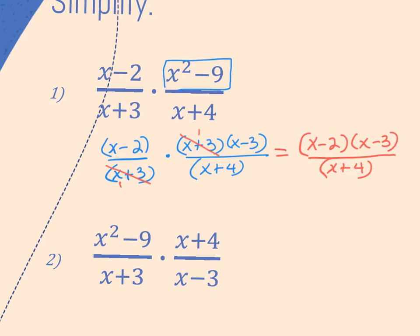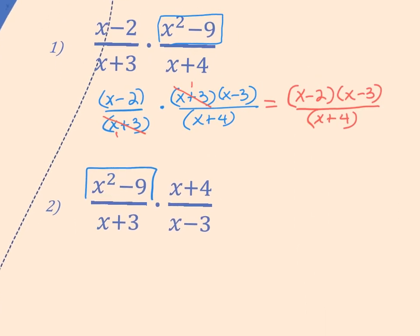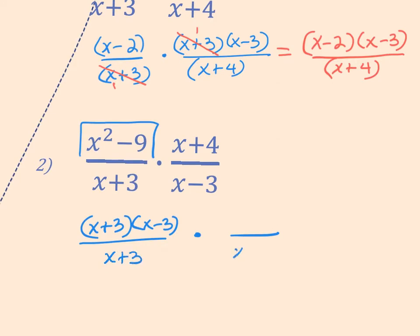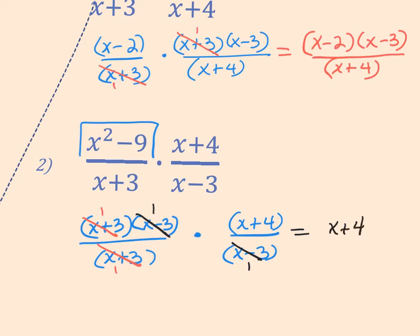Next example — same thing. I only have one piece to factor, and that's the top of the fraction. It's the difference of two squares, so it becomes x plus 3 times x minus 3. I rewrite the rest of the problem. I look for things to simplify: I have x plus 3 top to bottom — one on top, one on the bottom. Anything divided by itself is 1. Then x minus 3 and x minus 3 cancel, and the only thing left is x plus 4. Done.